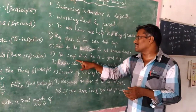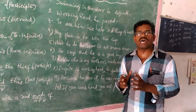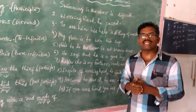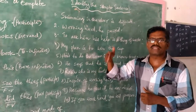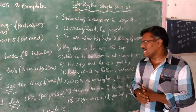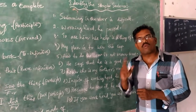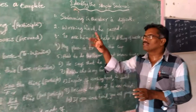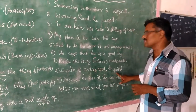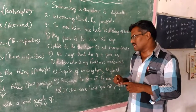Look at the sixth example: 'He says that he is a good boy.' Here, 'says' and 'is' — both verb forms are finite verbs. That means we have more than one finite verb in the sentence, so it is not a simple sentence. It may be complex or compound. Seventh: 'Robin, who is my brother, reads well.' Here, 'is' and 'reads' — both verb forms are finite verbs, so we have more than one finite verb and this is not a simple sentence. Eighth: 'In spite of working hard, he failed.' Here, 'working' is a non-finite verb whereas 'failed' is a finite verb. We have only one finite verb, so this is called a simple sentence.